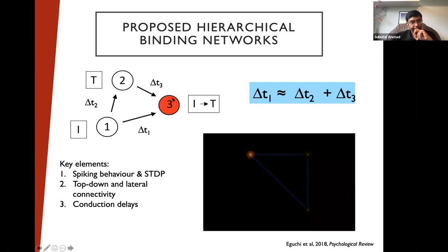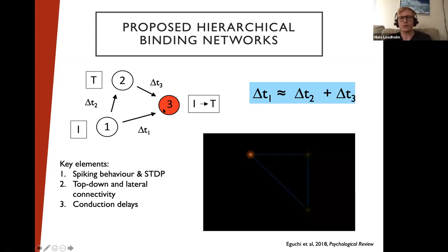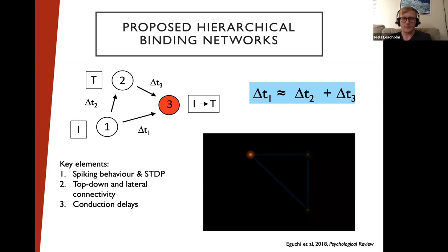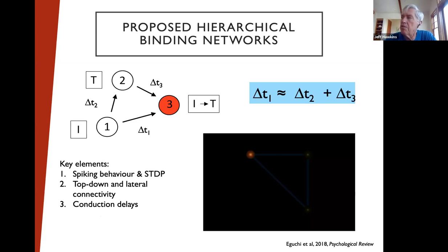It may seem convenient to have delays enabling this relationship, but interestingly with STDP — spike-time dependent plasticity, the main form of plasticity in the brain — if you start with random delays, it leads to exactly these kinds of timings, enabling these representations. This also requires top-down lateral connectivity and conduction delays — all elements from neuroscience.